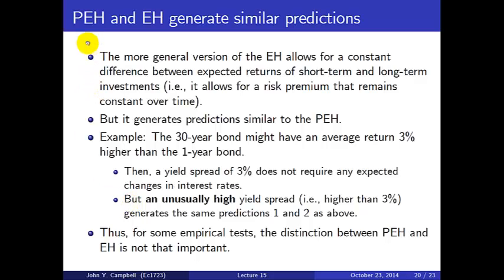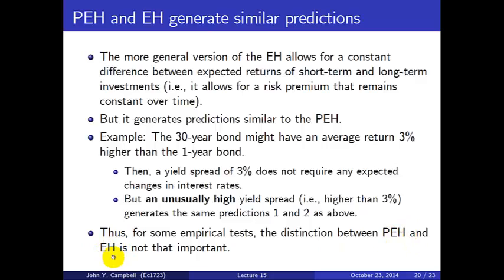The more general expectations hypothesis, EH, is the same as the PEH except it allows for a constant risk premium on long-term bonds, giving similar predictions. For example, a 30-year bond might have an average return 3% higher than the one-year bond. In that case, a yield spread of 3% requires no expected changes in interest rates, but an unusually high spread above 3% generates the same predictions as before. In empirical tests, the distinction between PEH and EH is not that important — the PEH has an intercept of zero and the EH has a free intercept, but the implications for the dynamics of interest rates are the same.